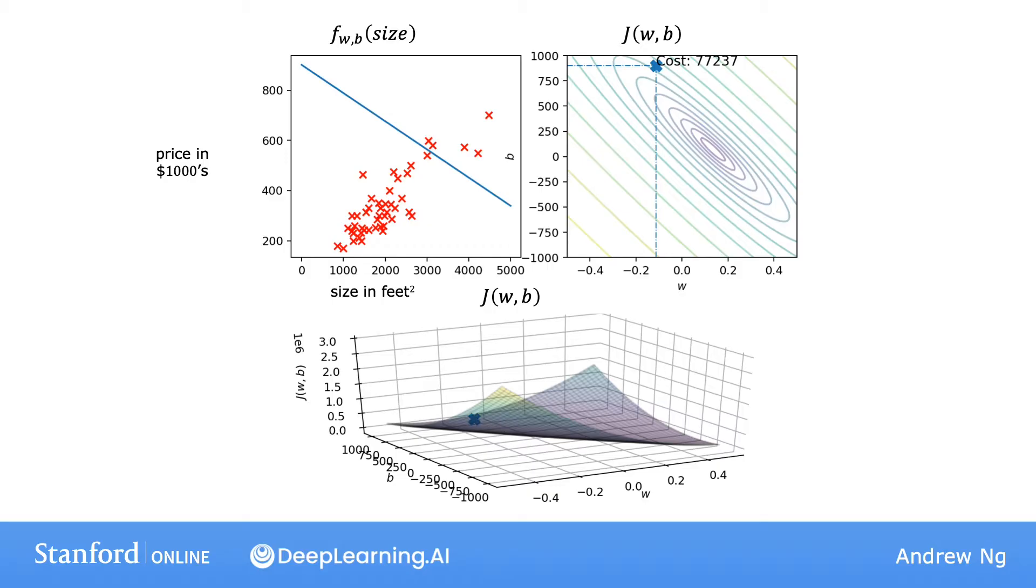Often w and b will both be initialized to zero, but for this demonstration, let's initialize w to be equal to negative 0.1 and b to be 900. So this corresponds to f of x equals negative 0.1x plus 900.